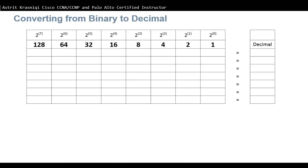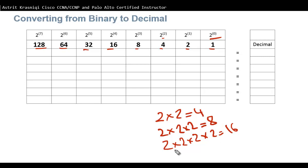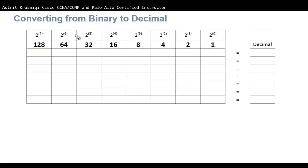Converting from binary to decimal is easy as long as you remember the positional values. Write them down before an exam. Binary is in powers of 2: 2^0 = 1, 2^1 = 2, 2^2 = 4, 2^3 = 8, 2^4 = 16, 2^5 = 32 — it's just repeated multiplication by 2. As long as you know this table, conversion is straightforward.